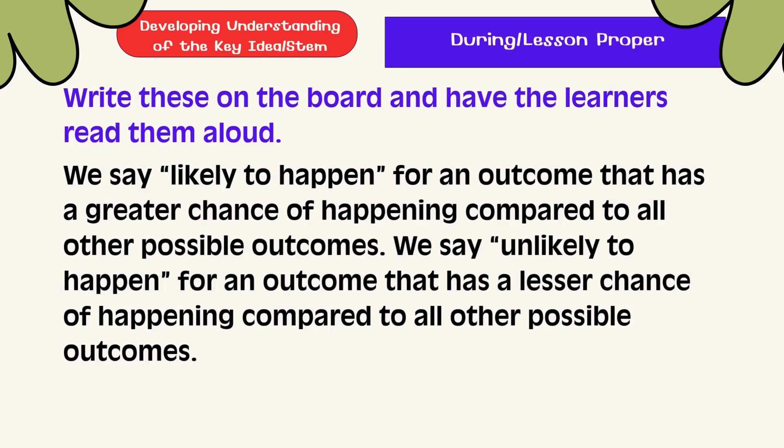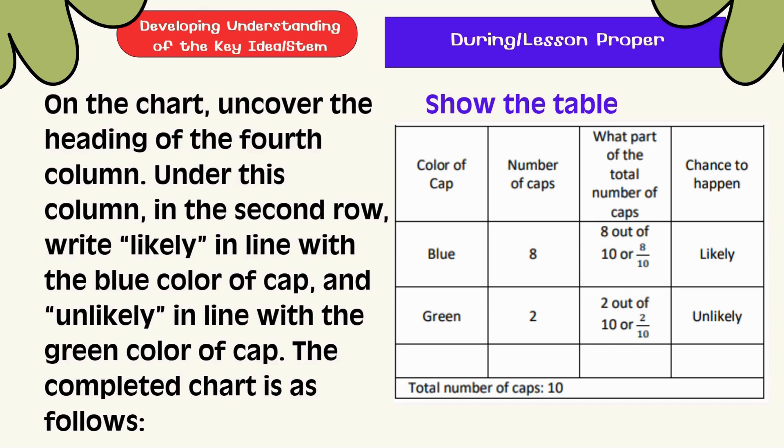We say 'likely to happen' for an outcome that has a greater chance of happening compared to all other possible outcomes. We say 'unlikely to happen' for an outcome that has a lesser chance of happening compared to all other possible outcomes. On the chart, uncover the heading of the fourth column. Under this column, write 'likely' in line with the blue color of the cup, and 'unlikely' in line with the green color of the cup. The completed chart is as follows.